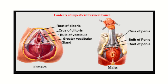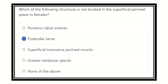In the female, anterior to the perineal membrane (also called the urogenital diaphragm), there is the superficial perineal space. We can see the bulb of the vestibule, greater vestibular gland, crura of the clitoris, and the transverse perineal muscles — all located in this superficial perineal space.